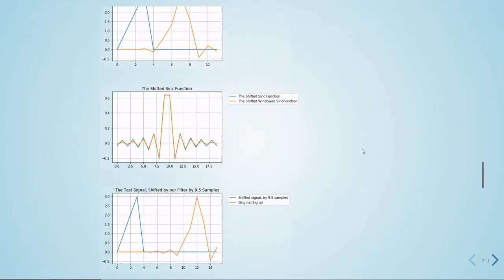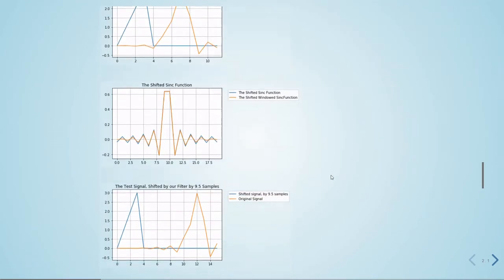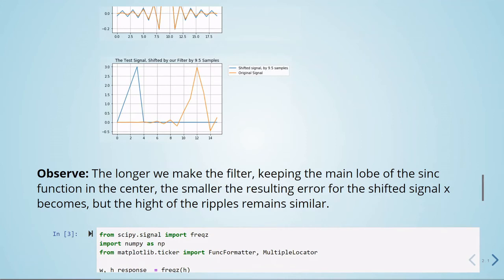And now we see that we have shorter errors here. So the longer we make the filter, keeping the main lobe of the sinc function in the center, the smaller the resulting error for the shifted signal X becomes. But the height of the ripples, they remain similar.